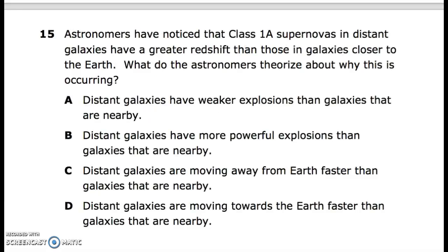15. Astronomers have noticed that Class Ia supernovas in distant galaxies have a greater red shift than those in galaxies closer to the Earth. What do the astronomers theorize about why this is occurring? A. distant galaxies have weaker explosions than galaxies that are nearby, B. distant galaxies have more powerful explosions than galaxies that are nearby, C. distant galaxies are moving away from the Earth faster than galaxies that are nearby, D. distant galaxies are moving toward the Earth faster than galaxies that are nearby.